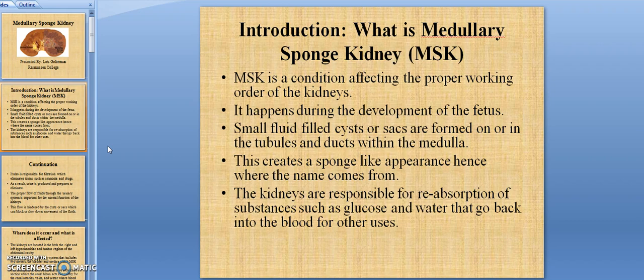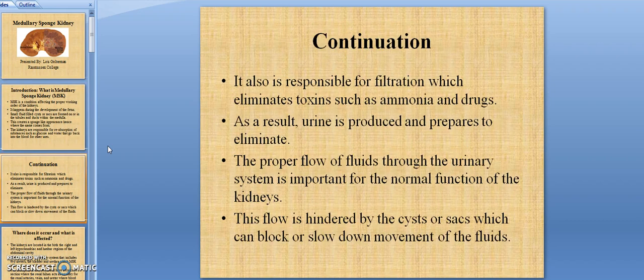The kidneys are responsible for reabsorption of substances such as glucose and water that go back into the blood for other uses. They are also responsible for filtration which eliminates toxins such as ammonia and drugs. As a result, urine is produced and prepared to eliminate. The proper flow of fluid through the urinary system is important for the normal function of the kidney. This flow is hindered by the presence of cysts which can block or slow down the movement of fluids.